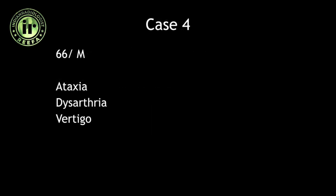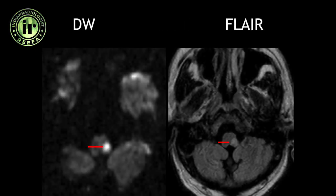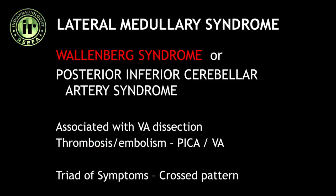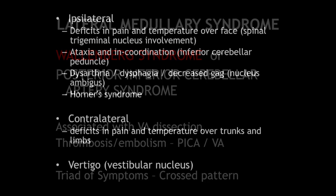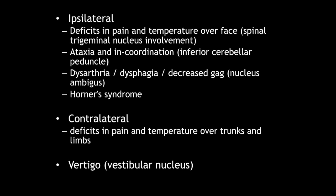A 66-year-old male came with ataxia, dysarthria, and vertigo. MRI of the brain showed restricted diffusion within the left medulla, posteriorly and laterally, appearing hyper-intense on FLAIR images. This is a case of lateral medullary syndrome, also called Wallenberg syndrome or posterior inferior cerebellar artery syndrome. It can be associated with vertebral artery dissection or thrombosis or embolism of the PICA or vertebral artery. It has a classical triad with a crossed pattern — ipsilateral and contralateral findings combined with symptoms from vestibular nucleus involvement. Restricted diffusion in the lateral medulla confirms this diagnosis.